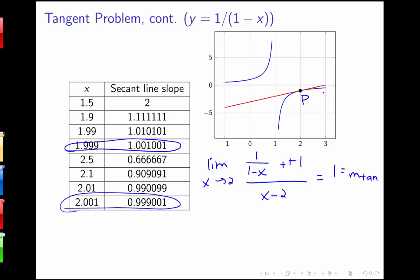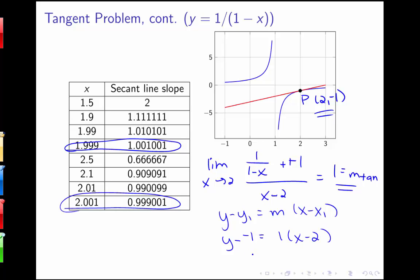Our original question was to find the equation of that tangent line to our point p. Now that we have the slope of the tangent line and our point, we can use the point-slope form. Recall that point-slope form is y minus y1 equals m times x minus x1. So we have y minus negative 1 equals 1 times x minus 2, which gives us y equals x minus 3 as the equation of the tangent line to the curve 1 over 1 minus x through point p.